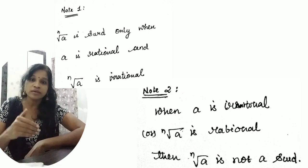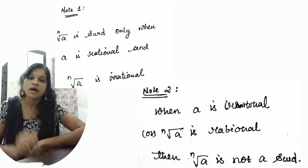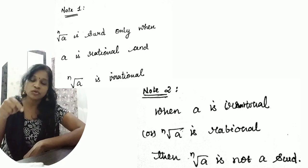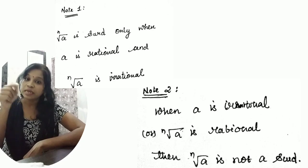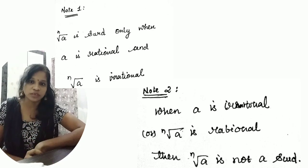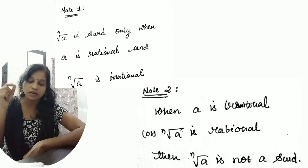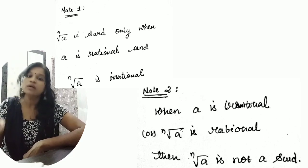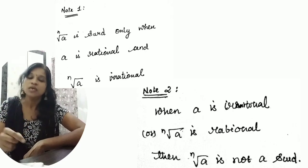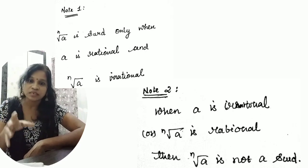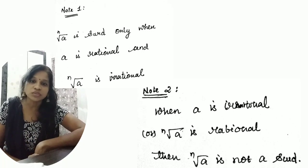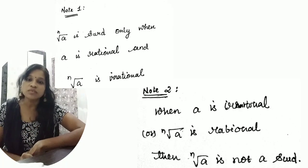The second point — when is it not a surd? The numbers for which the nth root of a is not irrational are not surds. So very importantly, inside that value a must be rational and nth root of a must be irrational. Both conditions must be satisfied for a number to be called a surd; otherwise it is not a surd.